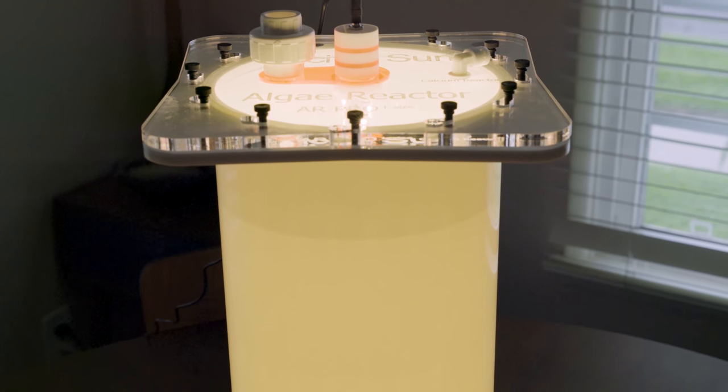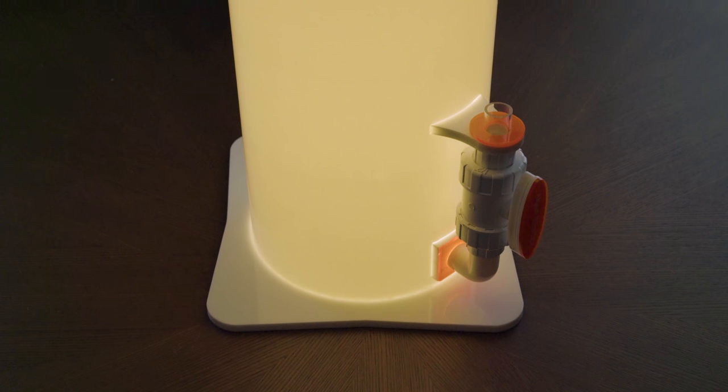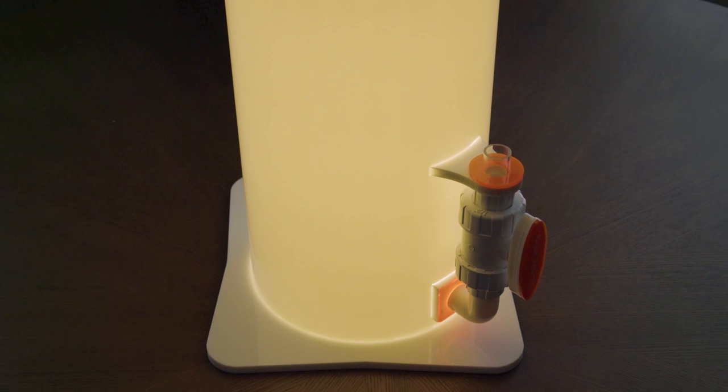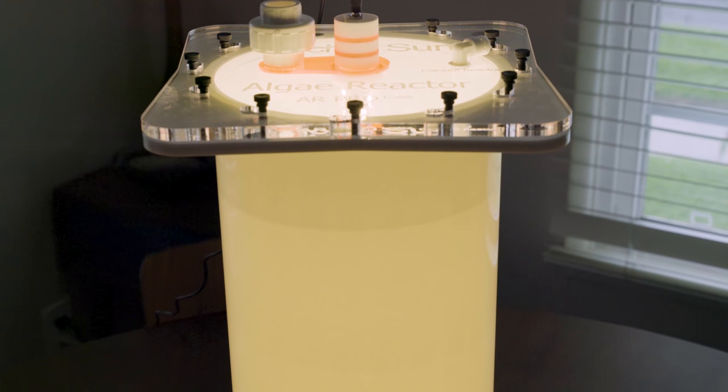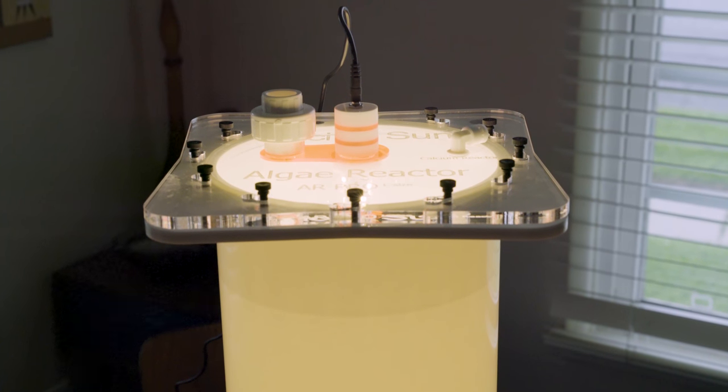So this is a large model Algae Reactor. They have a small and a medium as well, but the large one is good for about 250 gallons to about 530 gallon tanks. My tank is about 288 gallons so this should work out really well. The flow rate that they want through this Algae Reactor is about 400 to 530 gallons per hour, so that should also be easily manageable.